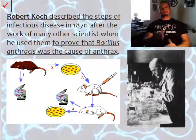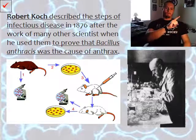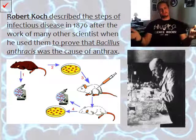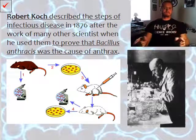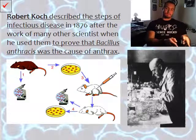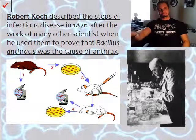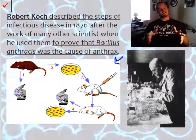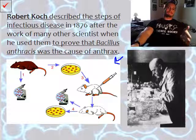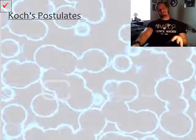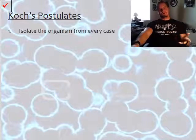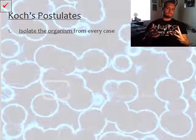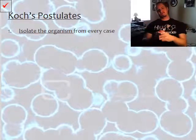A man by the name of Robert Koch led the forefront in figuring out what caused these diseases. Koch described the steps of infectious disease in 1876, after the work of many other scientists, when he used them to prove that Bacillus anthracis — a specific type of bacteria — was the cause of anthrax poisoning. He developed a step-by-step process, now known as Koch's postulates, also called the theory of infectious disease.